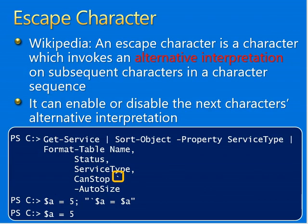Escape characters are used to assign special interpretation to a character that follows. In Windows PowerShell the escape character is the back-tick, also called grave accent, which is ASCII code 96. The escape character can be used to indicate a literal, to indicate line continuation, and to indicate special characters. As described in the wiki, an escape character invokes an alternate interpretation of subsequent characters in a sequence.